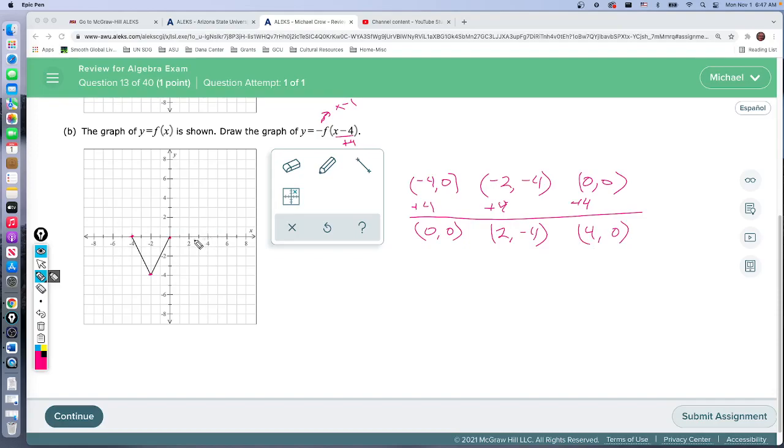What's happening is everything gets shifted this way to the right, which is backwards. You think the negative would move it in the negative direction, but negative moves it in the positive direction. Everything is going to shift over here. We would get something that looked like this, and then four, zero right there. Move over to here.